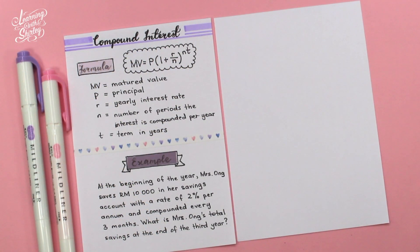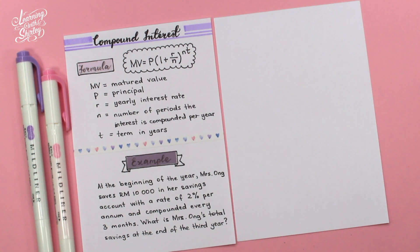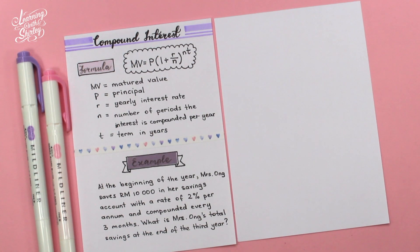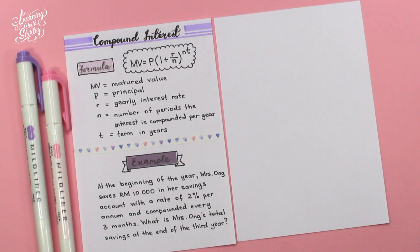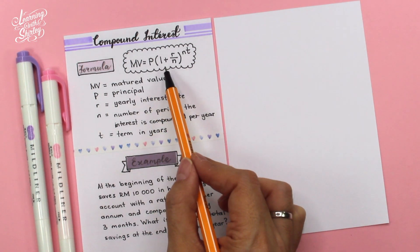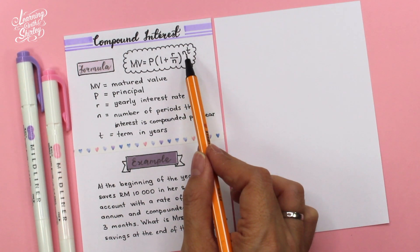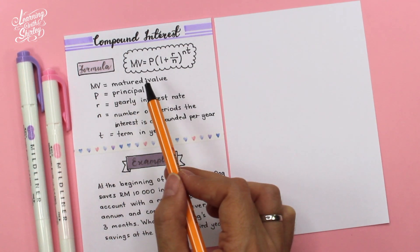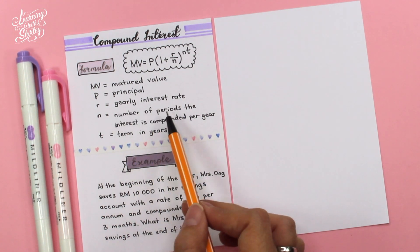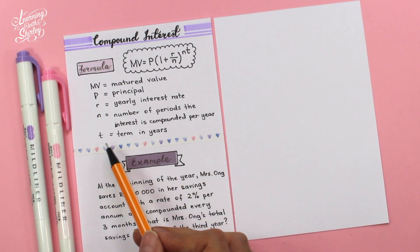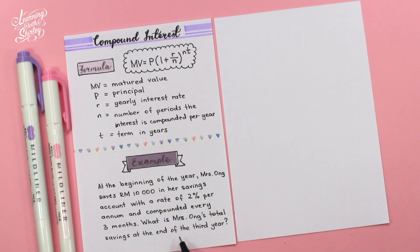What is compound interest? Compound interest is interest calculated based on the original principal and also the accumulated interest from the previous period of savings. The frequency of compounding can differ — for example, compounded once a year or once every three months. The formula is: MV = P(1 + r/n)^(nt), where MV is the matured value, P is the principal, r is the yearly interest rate, n is the number of periods the interest is compounded per year, and t is the term in years.